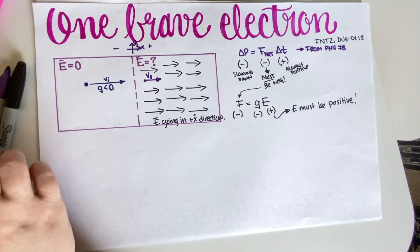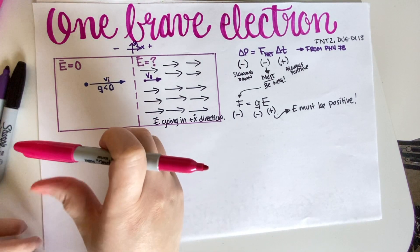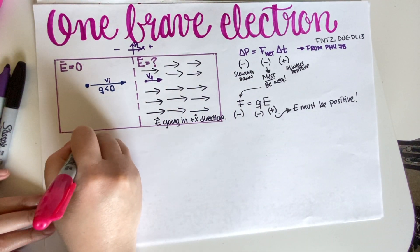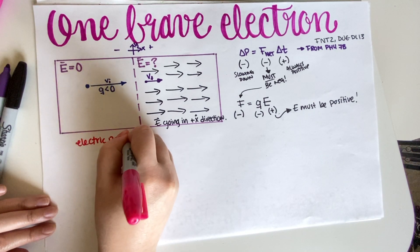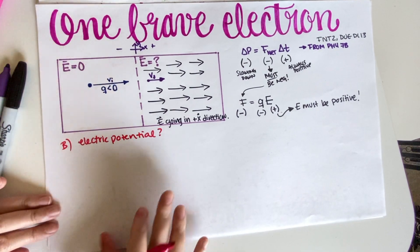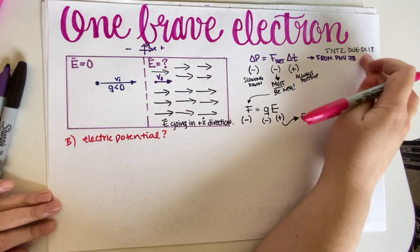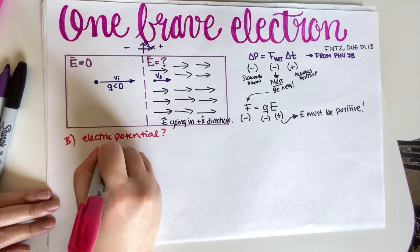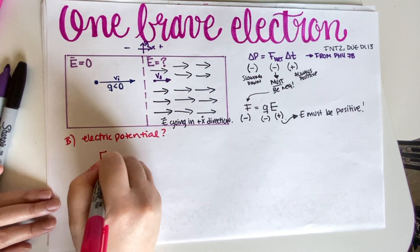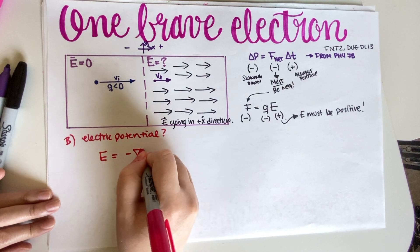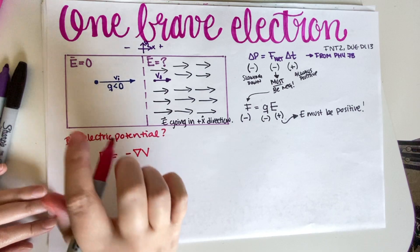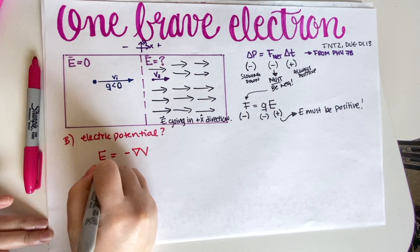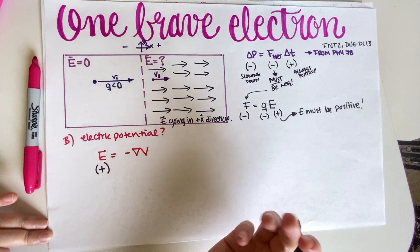So now we're going to move to part B. Part B is asking me about the electric potential. So how do we figure this out? Well, this is very useful because we can keep relating things. So by definition, the electric potential and the electric field are related by E equals negative delta V. So this is the equation. Now we know that E is positive.